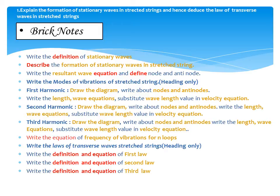Second harmonic: draw the diagram, write about nodes and antinodes, write the length and wave equations, substitute wavelength in velocity equation. Third harmonic: draw the diagram, write about nodes and antinodes, write the length and wave equations, substitute wavelength in velocity equation. Write the equation of frequency of vibration for n loops. Law of transverse waves in stretched strings — write the definition and equation of first law, second law, and third law.